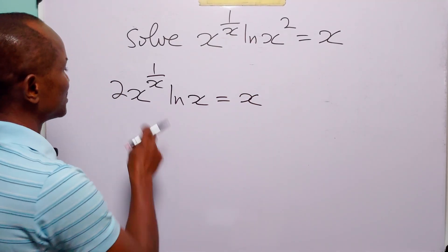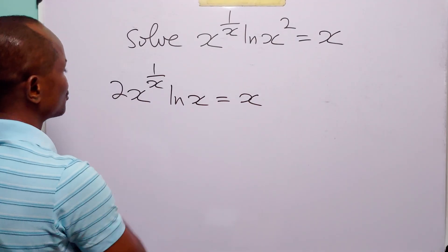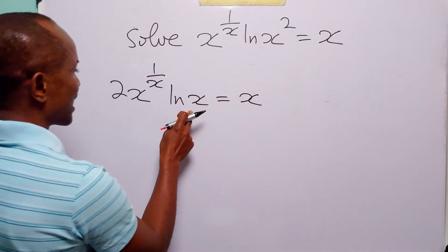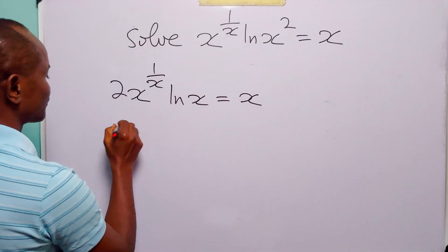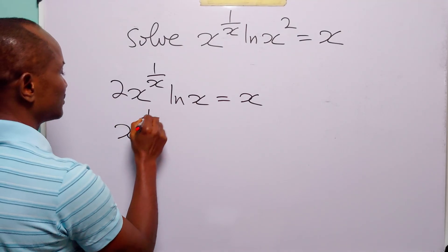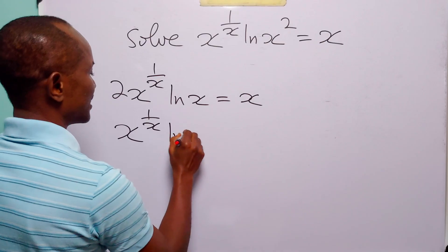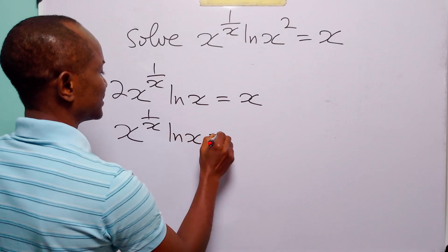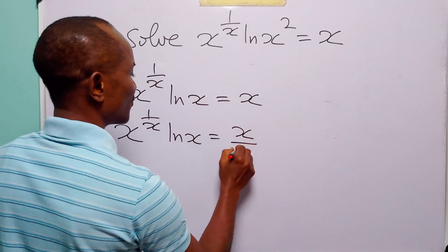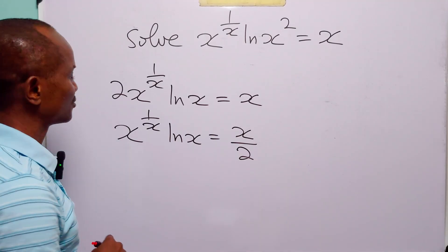The next thing we are going to do is divide both sides of this equation by 2. When we do that, we have x to the power 1 over x times ln x is equal to x over 2.